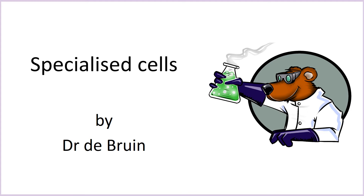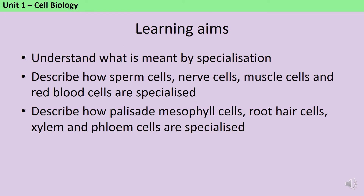This video is all about the cell biology topic of specialised cells. By the end of the video, you should understand what is meant by specialisation and be able to describe how sperm cells, nerve cells, muscle cells and red blood cells in animals are specialised, as well as palisade mesophyll cells, root hair cells and xylem and phloem cells in plants.